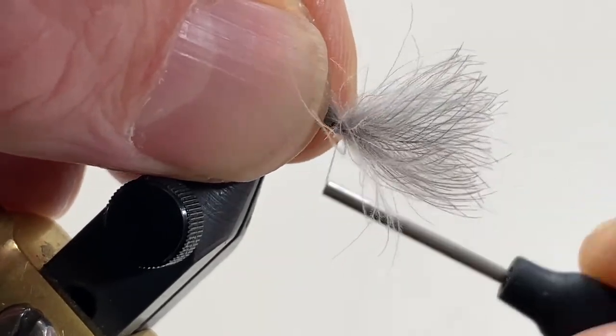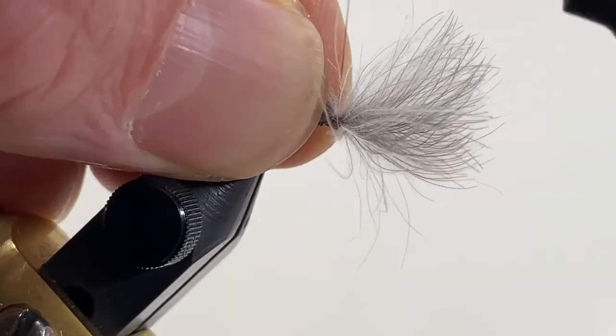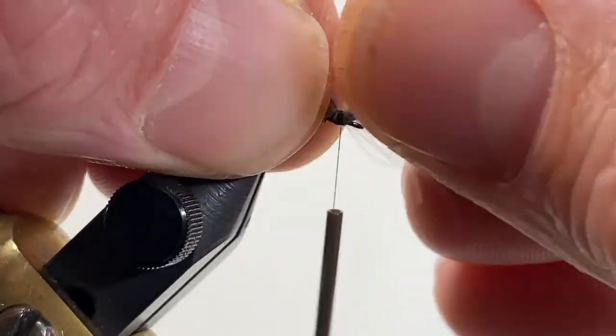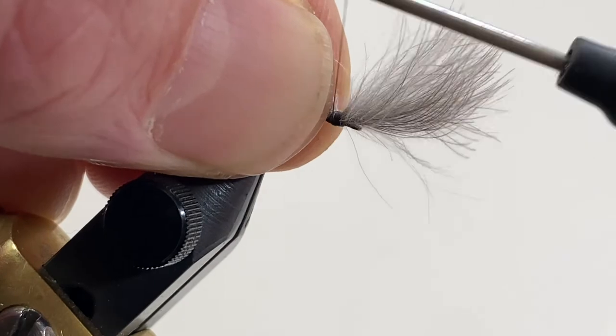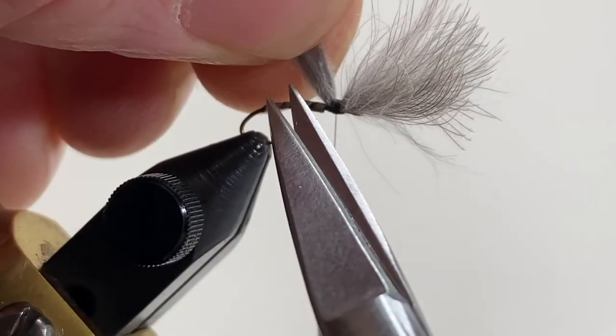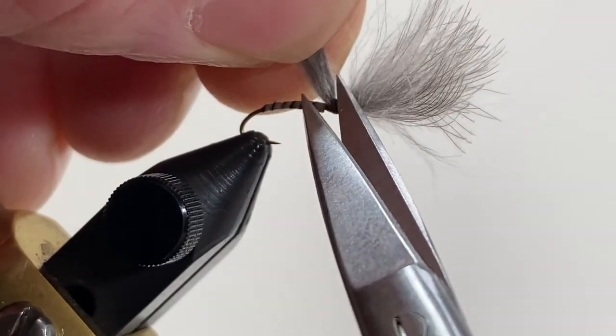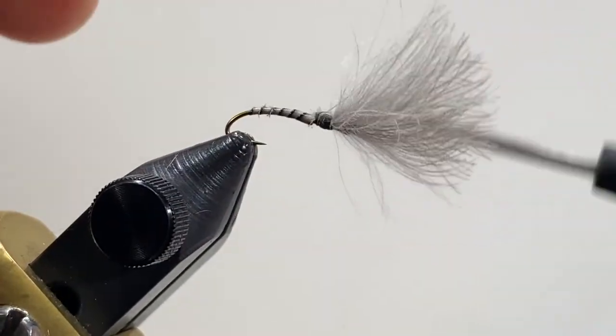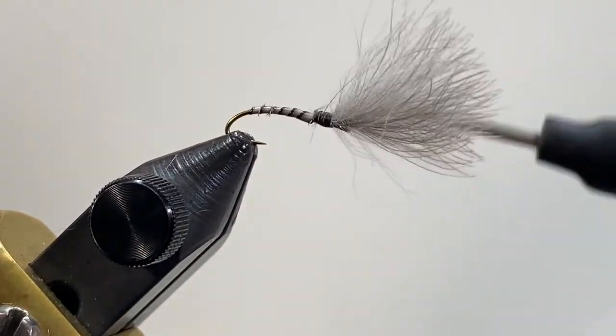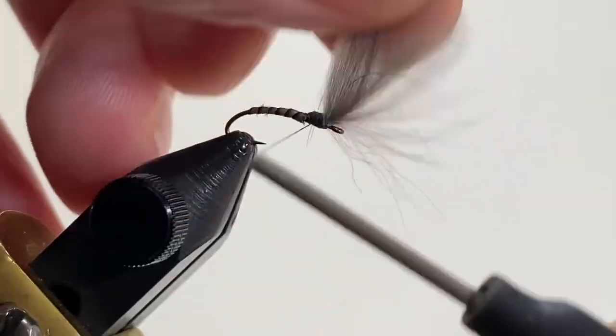And then we'll secure those feathers to the shank, extending out forward, trimming off excess, and then wrapping down to form a black thorax to the fly.